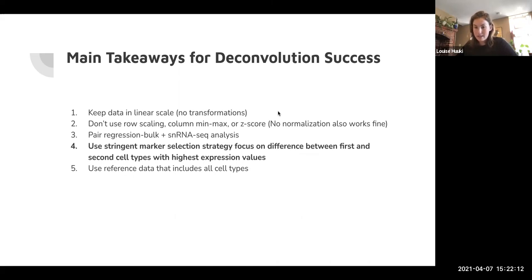Their fifth point is use the reference data that includes all the cell types that are going to be present in your bulk data. I think they bring up and show that that can really impact your data, but I'm not sure how to do that totally. They don't really mention how to ensure you've done that, but it might be something to think about going forward. Yeah. So that was that paper. Hope you guys liked it.